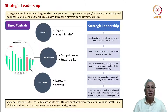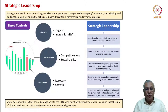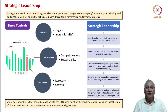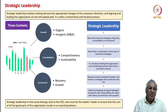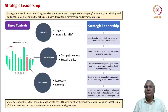Strategic leadership is the ability to take the company forward in any business context. These contexts are typically of three types: growth (through organic or inorganic routes including mergers, acquisitions, and joint ventures), consolidation (making the business more competitive and sustainable), and turnaround (recovering a declining business). Strategic leadership at the CEO level involves more than business strategies of growth, consolidation, and turnaround — it is also more than the best of functional strategies merged together.